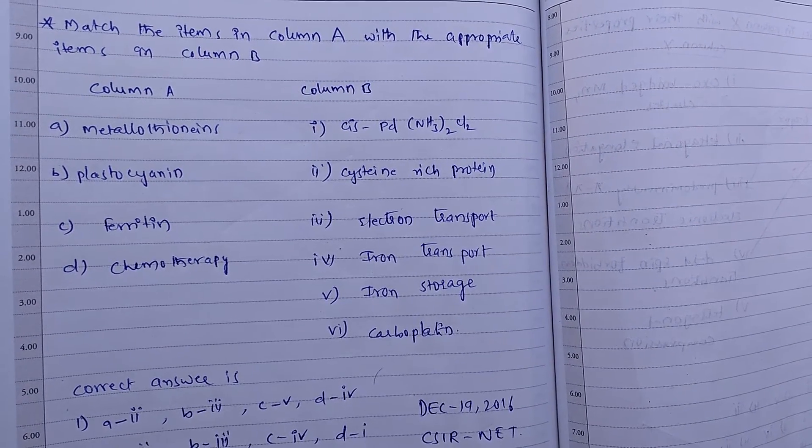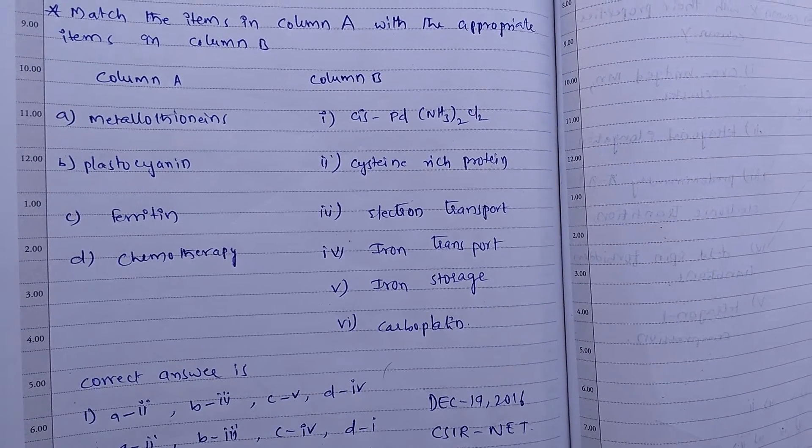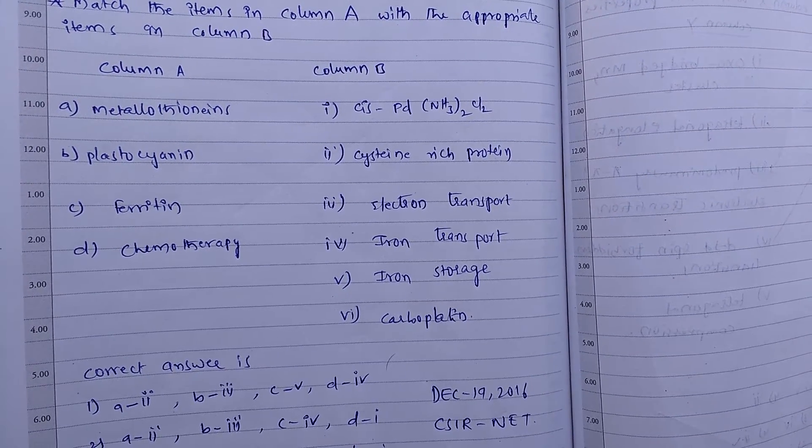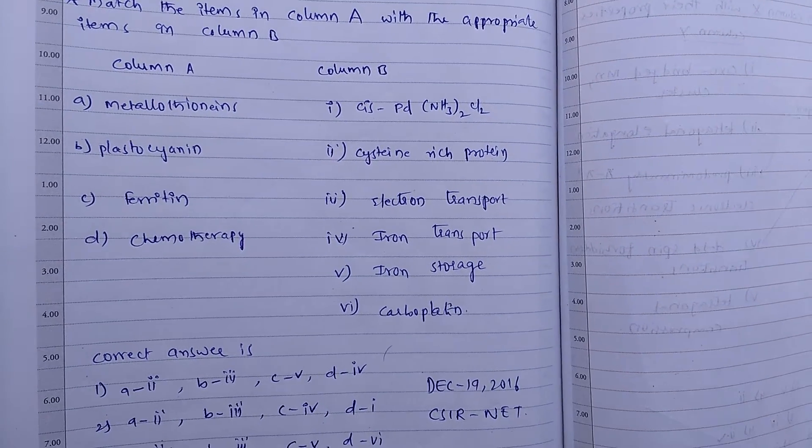i. Cis-Palladium-NH3-2-Cl-2. And second one, cysteine-rich protein. Third one, electron transport. Fourth one, iron transport. Fifth one, iron storage. Sixth one, carboplatin.